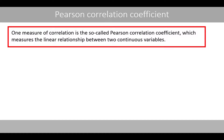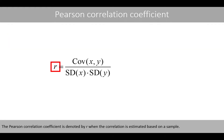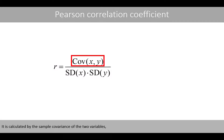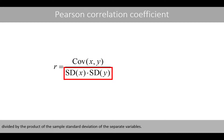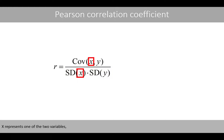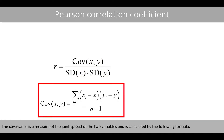One measure of correlation is the so-called Pearson correlation coefficient, which measures the linear relationship between two continuous variables. The Pearson correlation coefficient is denoted by little r when the correlation is estimated based on a sample. It is calculated by the sample covariance of the two variables divided by the product of the sample standard deviation of the separate variables, where x and y represent the two variables. The covariance is a measure of the joint spread of the two variables.